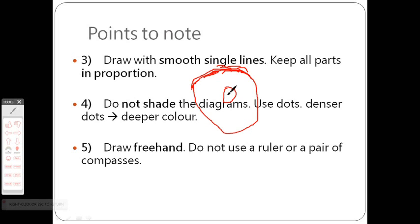If you want to show color difference, for example the nucleus is darker in color than the cytoplasm, you should not shade it. You should instead use dots. The more dots you give means the denser the color. If the nucleus is more deep in color, put more dots. The cytoplasm also contains color but lighter, so give fewer dots.